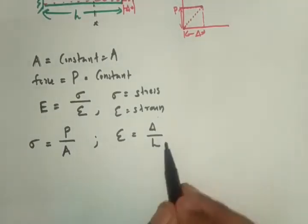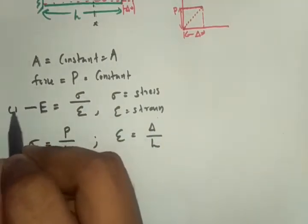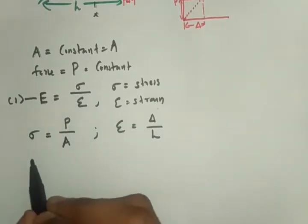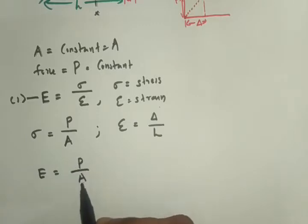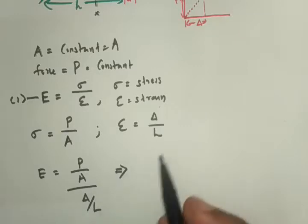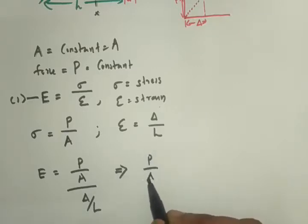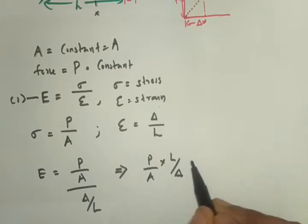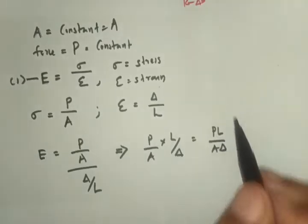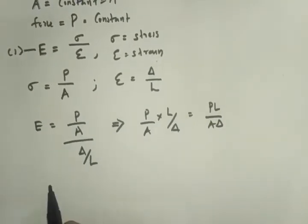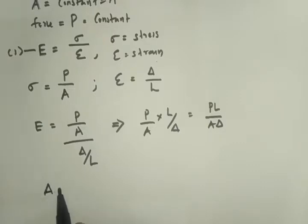Putting these into the first equation, E equals P divided by A, all divided by delta divided by L. This simplifies to E equals P by A multiplied by L by delta, which gives E equals PL divided by A times delta.